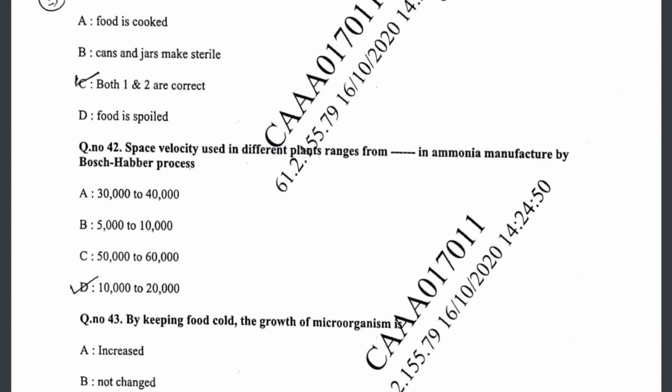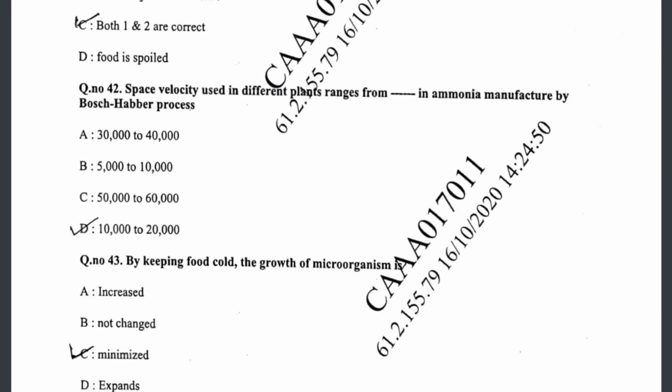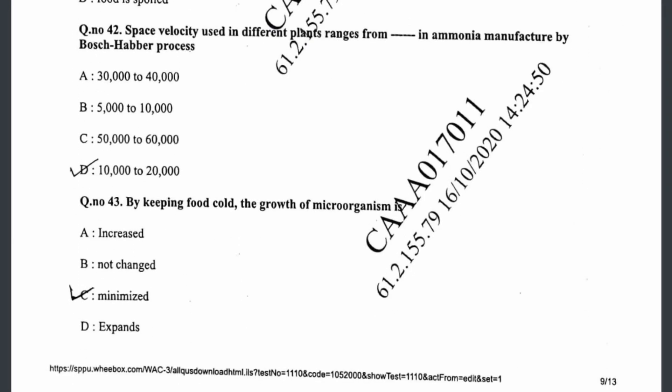Question forty-two: space velocity used in different plants ranges from 10,000 to 20,000 in ammonia manufactured by the Bosch-Haber process. Question forty-three: by keeping food cold, the growth of microorganisms is minimized — that is option C.